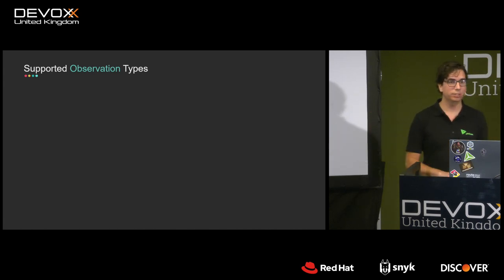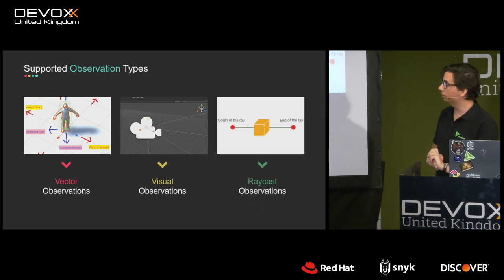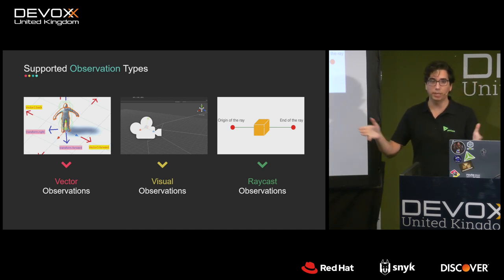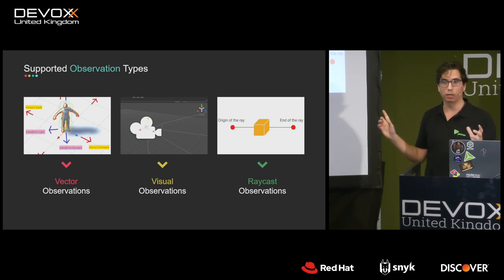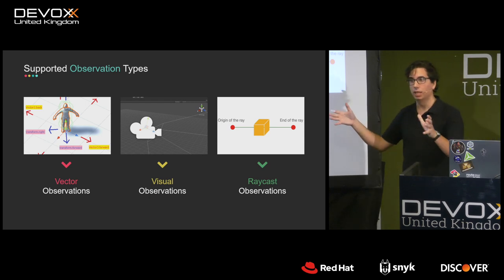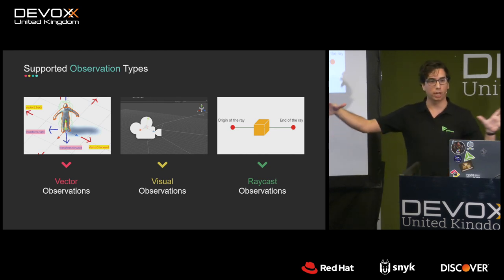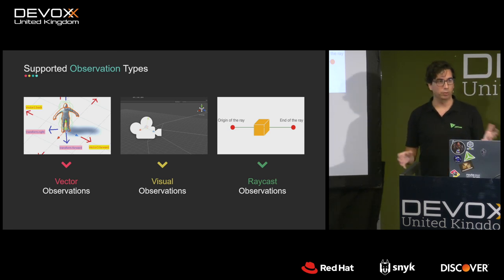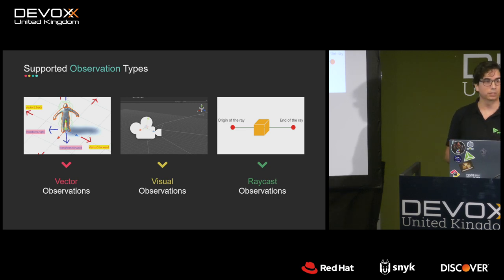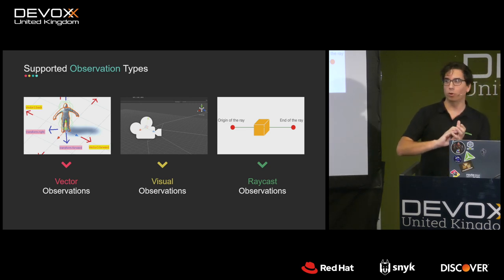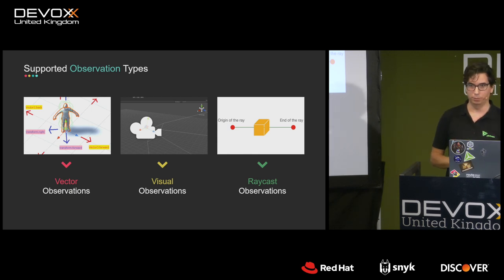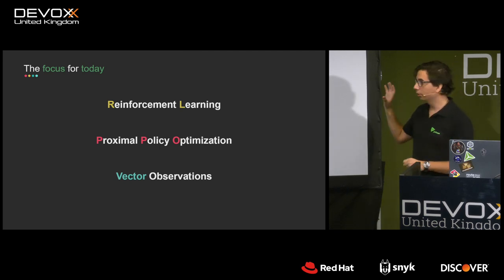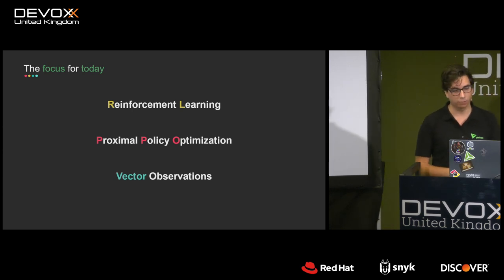Agents make observations in 3D space. The ML Agents package supports vector observations — basically numbers representing positions or other floats in 3D space — visual observations, where the camera feed is sent to the Python trainer (you can even use multiple cameras), and raycast observations, which are lasers shot from point A to point B that return what they hit. For today, we'll focus on reinforcement learning with PPO and vector observations.